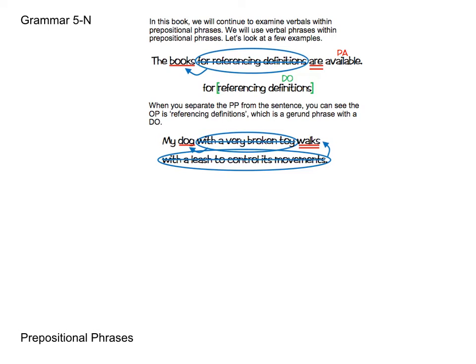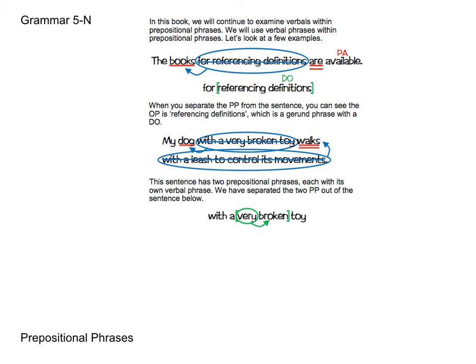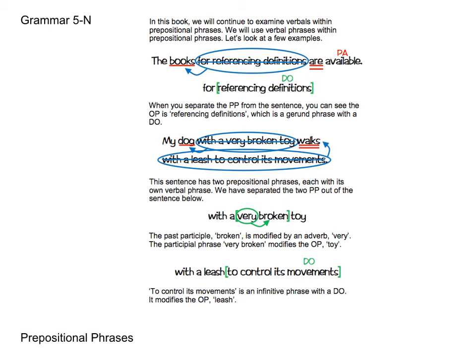Let's look at another couple of examples. My dog, with a very broken toy, walks with a leash to control its movements. We have the prepositional phrase "with a very broken toy" — here we have a past participial phrase. Our past participle is "broken" and it's being modified by the adverb "very." That phrase modifies the object of the preposition "toy." Our next prepositional phrase is "with a leash to control its movements" — here we have an infinitive phrase, and the action of the verbal is being transferred to "movements," the direct object of the phrase. The infinitive phrase modifies the object of the preposition "leash."